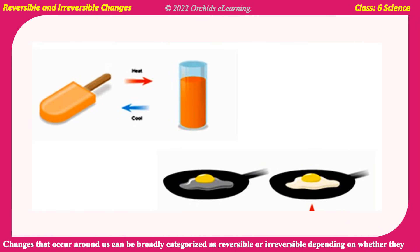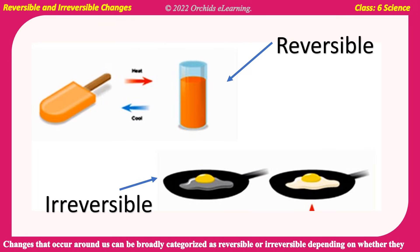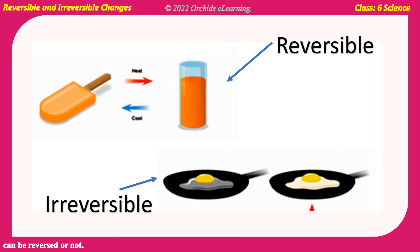Changes that occur around us can be broadly categorized as reversible or irreversible, depending on whether they can be reversed or not.